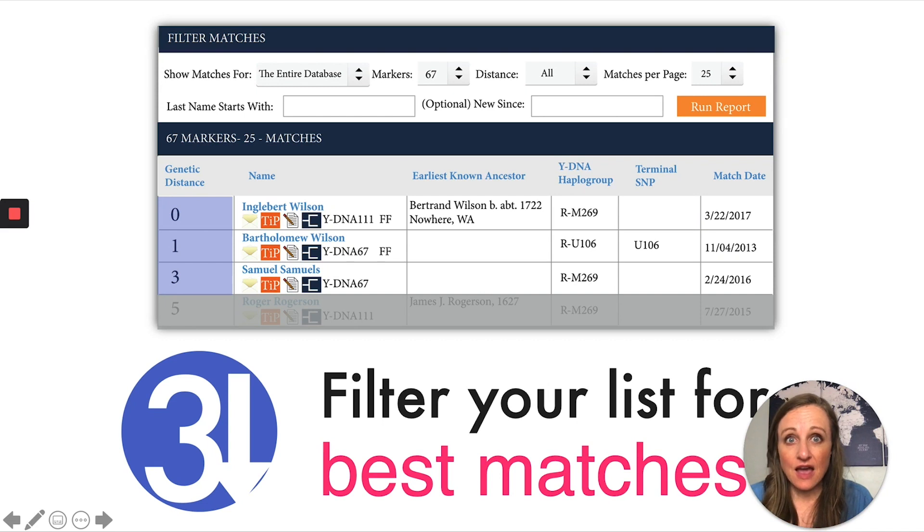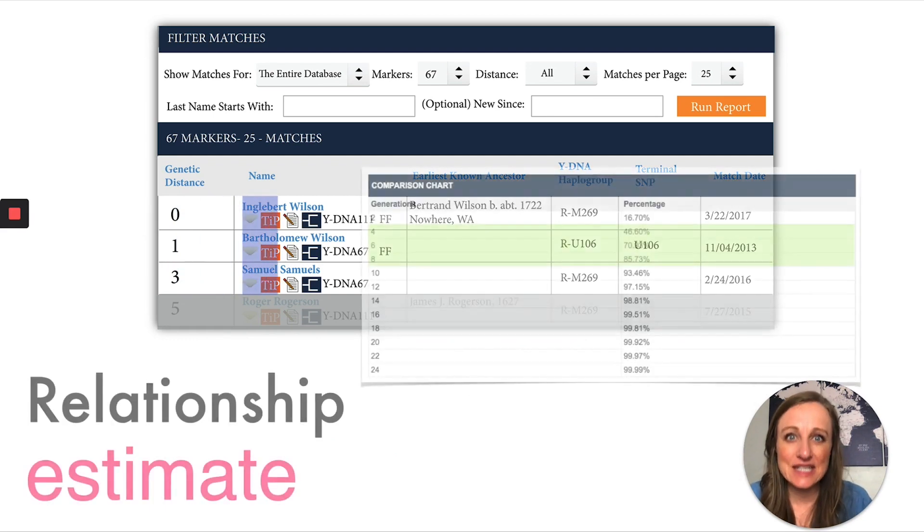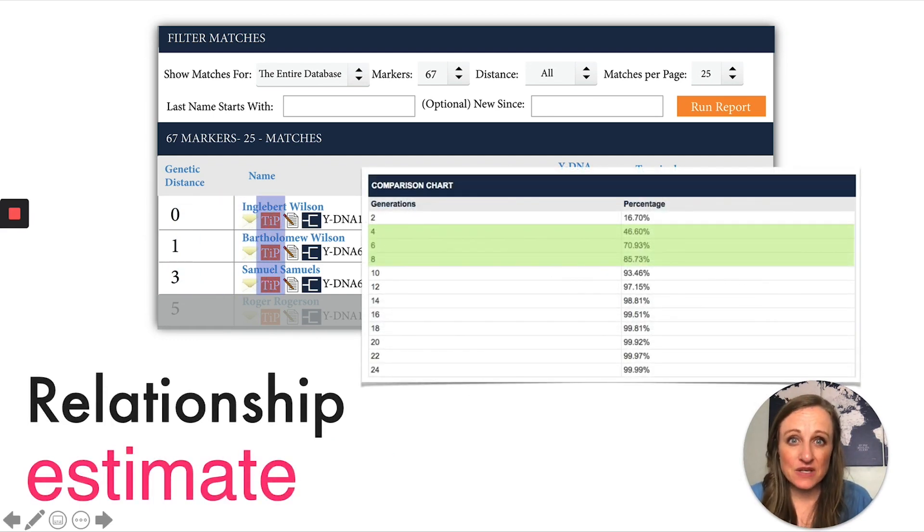One way to double check how closely you might be related to someone else is to click on that little orange button called the TIP calculator. That TIP calculator brings up this statistical calculation that says, for example, it's 71% likely that you should share a common ancestor with this person at or before six generations. And just like that, you kind of have a roadmap. You need to push your genealogy out to six generations. Your match needs to push their genealogy out to six generations, and then you should start looking around for your common ancestor. So look at that TIP calculator. It really does give you a good guide about whether or not this match is going to be worth your time.